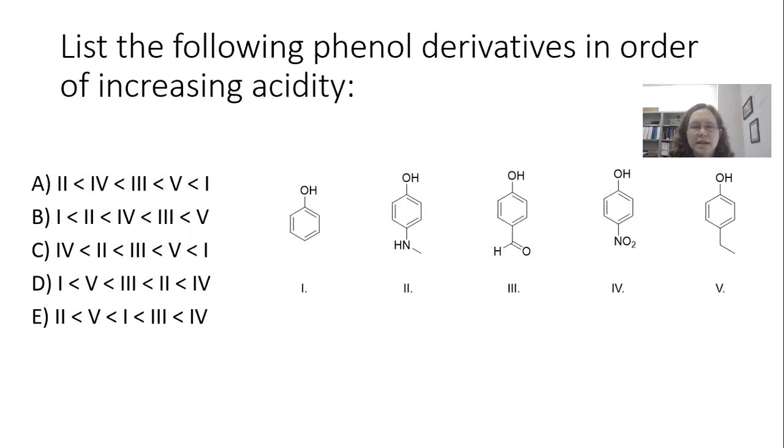In this instance, we have a set of benzene derivatives, all of which have an OH group, so they're all phenol derivatives. But we also have other substituents present on the ring. We have an amine, an aldehyde, a nitro group, and an alkyl group. And so the question is, how are those different substituents impacting the conjugate base that we would make in each instance?